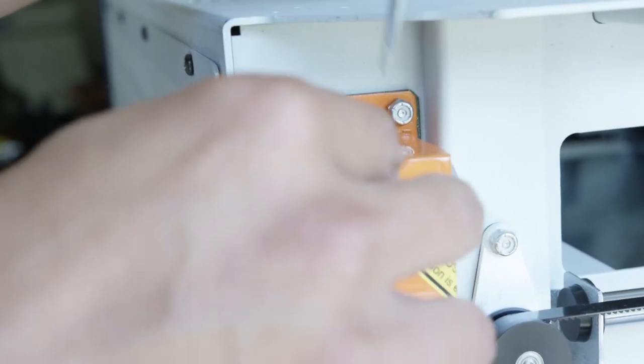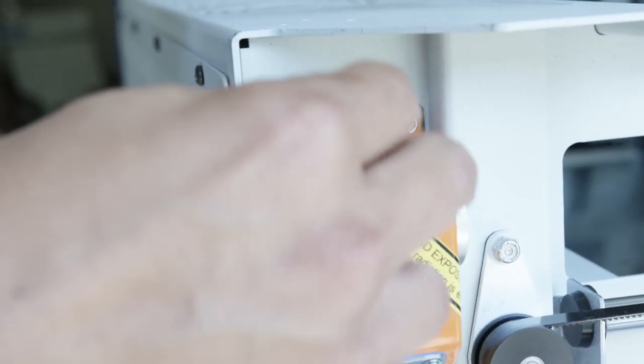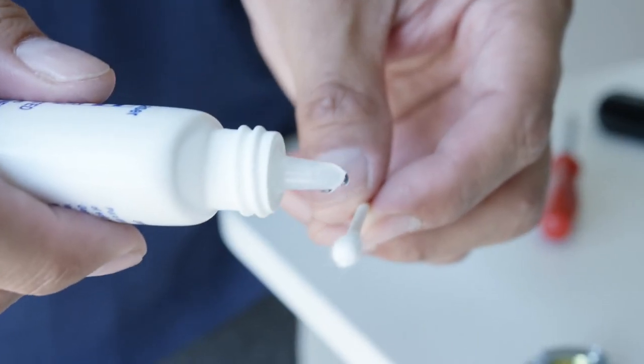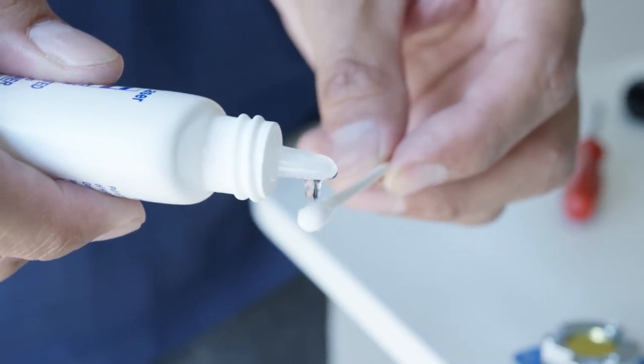The periscope housing mirrors may be attached with an adhesive layer, and a tool like a flathead screwdriver can be useful to help pry the mirrors away from the housing.